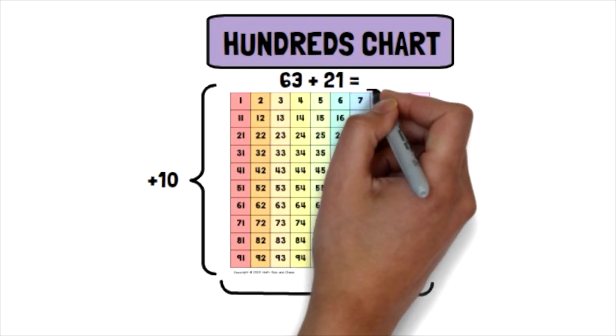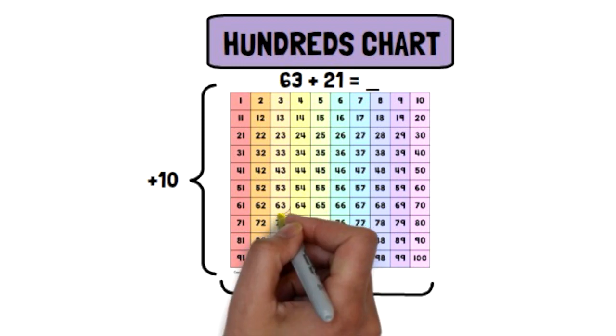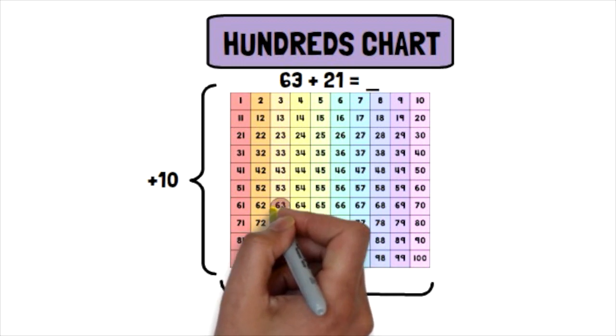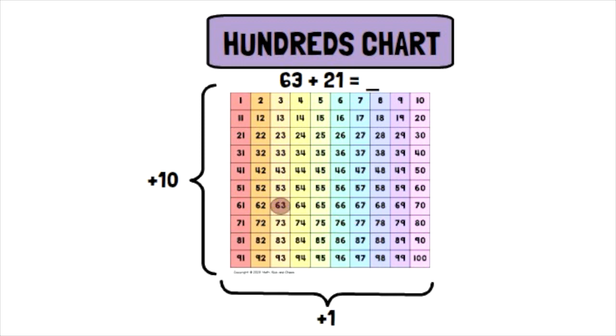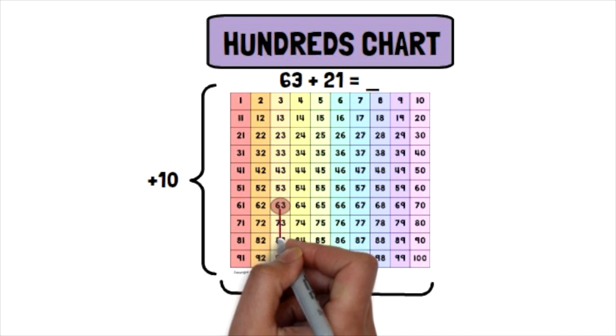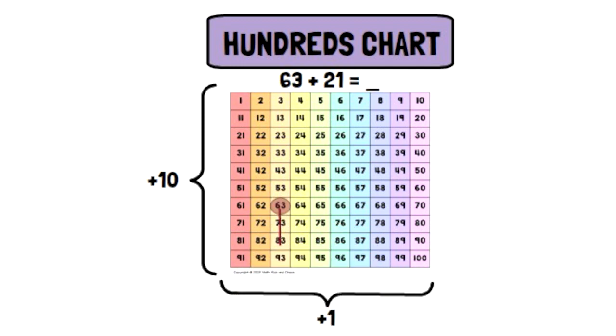Taking that 63 plus 21 again, you would start your child at 63 and ask them how many tens are in 21. Hopefully, they would answer that there are 2, so you would say, well, how many times do you need to hop down to show 20? And they would need to hop down 2 times to show 10 plus 10, which is 20. Then you would say, well, how many ones are in 21? There's only 1, so they would only hop over 1 square. And they would arrive at 84.